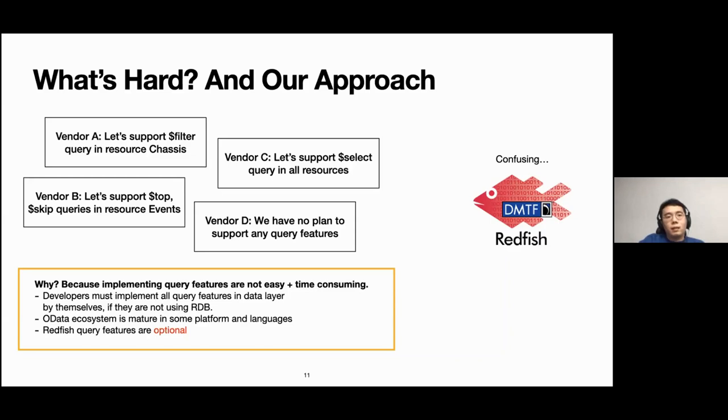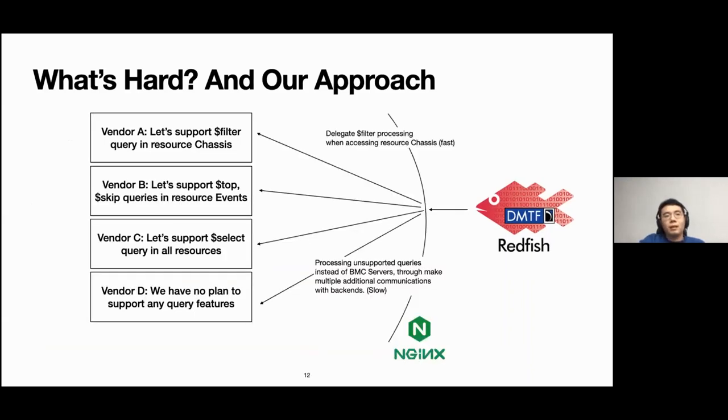Why this happening? I think implementing query features are not super easy things and pretty time consuming to developers. Because if BMC system put all data into a single relational database, then they can easily implement query features by implementing a query translation layer between OData and SQL. However, if not, then developers should implement every query features in their data layer by themselves. OData ecosystem is matured in some platforms and languages like ASP.NET, so developers have a narrow choice and most importantly the query features are optional. Our approach to that is to make a proxy server between Redfish services and clients and processing queries instead of Redfish services.